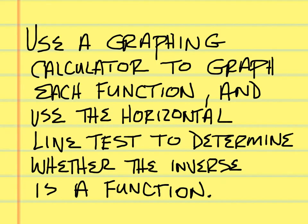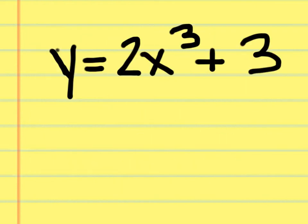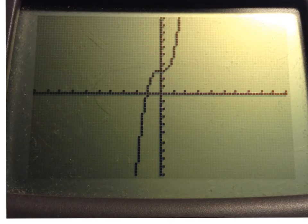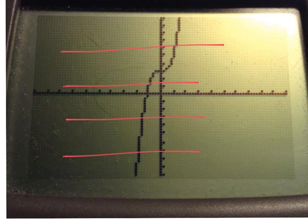Use a graphing calculator to graph each function and use the horizontal line test to determine whether the inverse is a function. For y equals 2x cubed plus 3, graph it and draw horizontal lines. No horizontal line crosses the graph in two places, so the inverse is a function — yes.